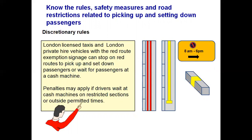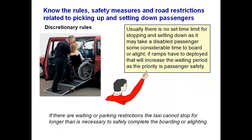On double yellow lines you officially cannot pick up or drop off, and on single yellow lines there are time restrictions. For example, between 8am and 6pm there is no stopping, picking up, setting down or loading. Penalties may apply if drivers wait at cash machines on restricted sections outside permitted times. For disabled passengers, there is usually no set time limit for stopping and setting down, as it may take considerable time to board or alight, especially if ramps need to be deployed for wheelchair users. The priority is the safety of passengers.